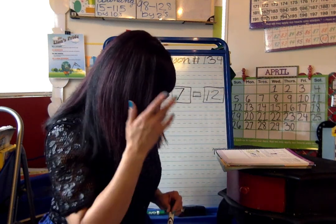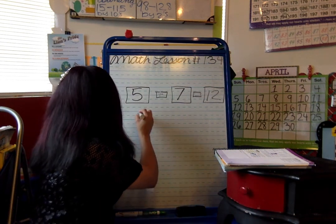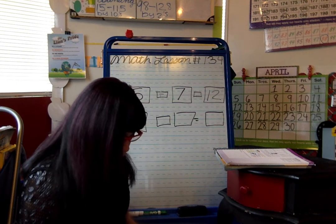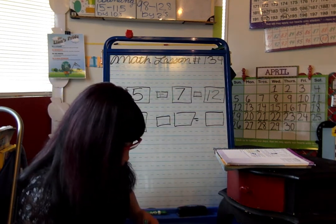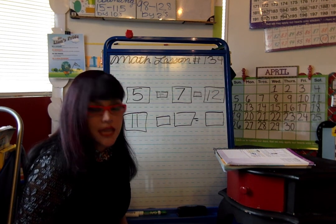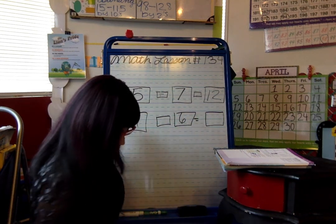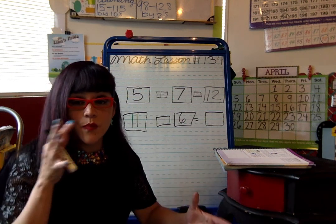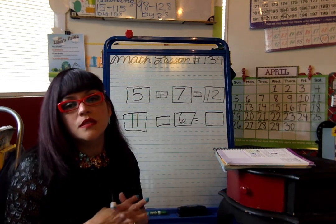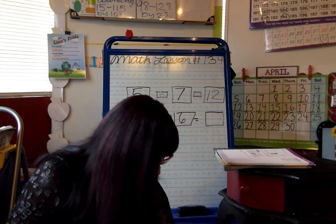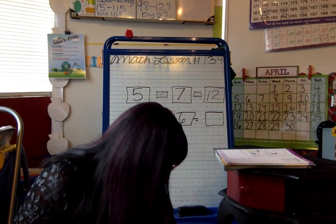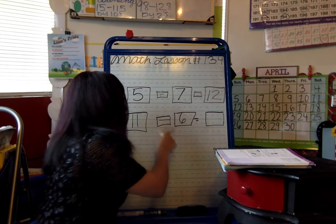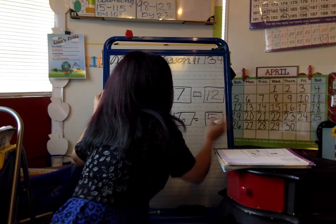One more problem: Mike pitched 11 softballs to Rob. Rob hit six of them. So we subtract six from 11, and our answer is five.